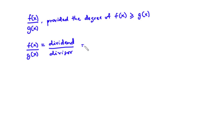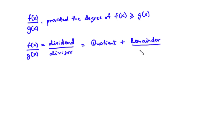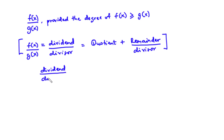So using the method of long division, we say that the dividend divided by the divisor is equal to the quotient plus remainder divided by the divisor. Now let's represent this information using the long division. So we say dividend divided by the divisor, which is the denominator, is equal to — now when performing the long division, we want to bring the divisor outside and then we have the dividend inside.